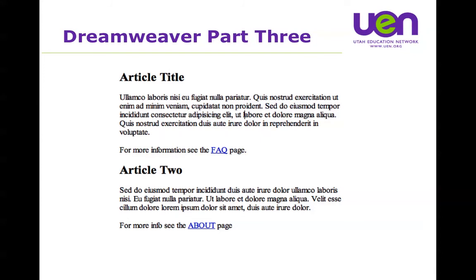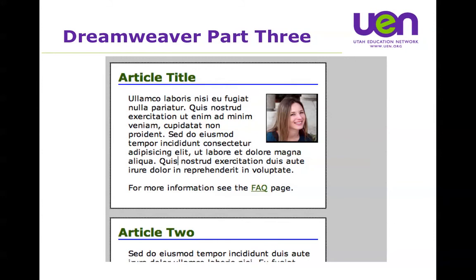Originally this is what the web was like - very text-based, very much like a word processing document, and that's what it was designed for. But it wasn't too long before designers came about and wanted to make web pages look more like brochures or magazines, more like they look today. You could create that kind of a look using HTML, but it was pretty complex, and you used HTML in a lot of ways it wasn't meant to be used - things like tables, table cells, and background colors inside of table cells.